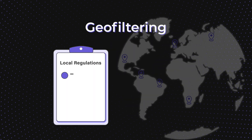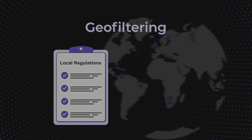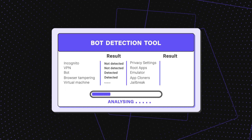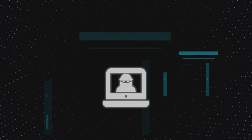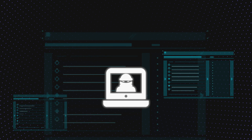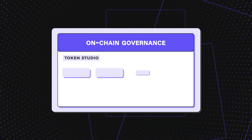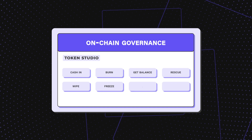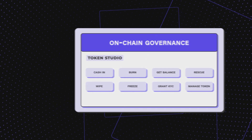Geo-filtering ensures compliance with local regulations, while our advanced bot detection program safeguards against fraudulent activity, identifying and preventing malicious bots in real time. With on-chain governance, you have complete control over your tokens, enforcing KYC requirements and ensuring compliance every step of the way.